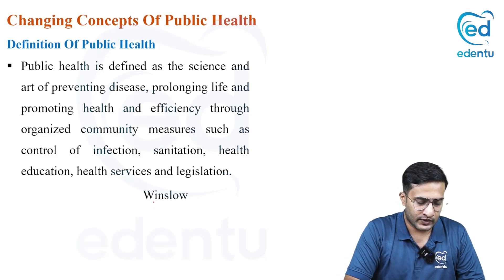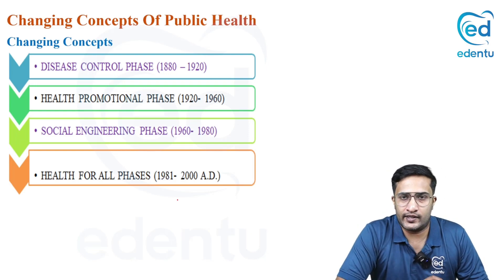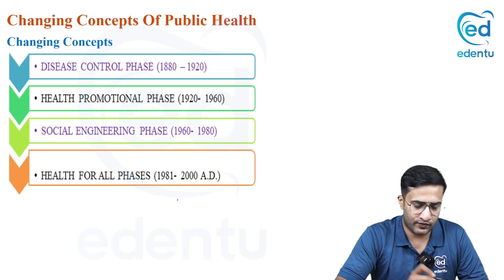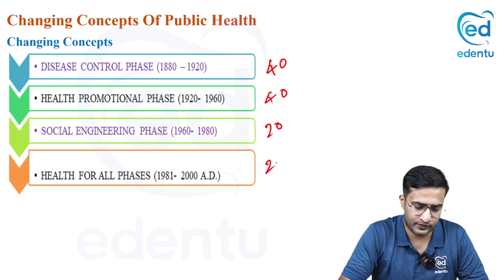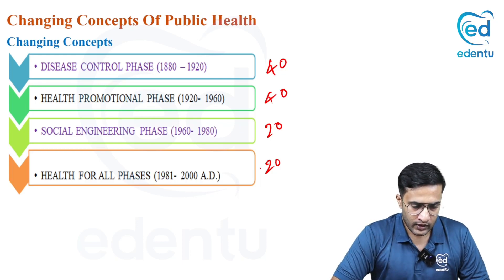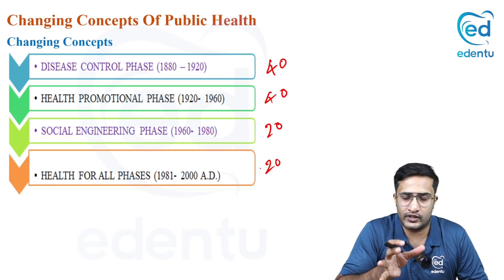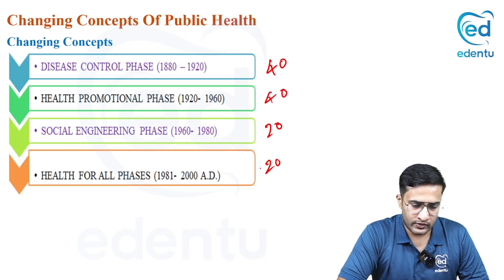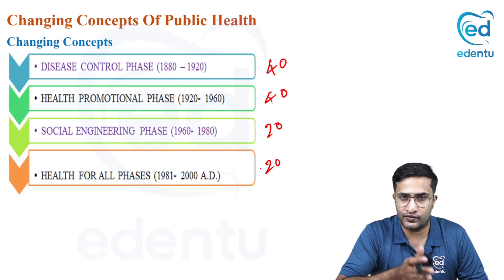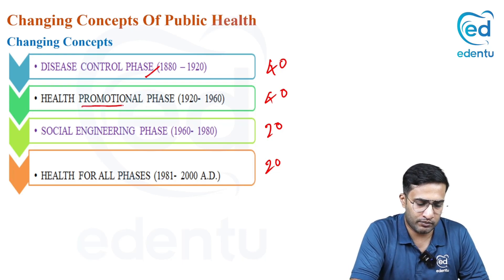Now we move to the concepts of public health. Do not forget it is public health — it is divided into four phases. The first two phases lasted 40 years each, and the last two phases lasted 20 years each. It started in 1880 in the last part of the 19th century. The first phase is the disease control phase, during the early 20th century and last part of the 19th century. The second phase, from 1920 to 1960, is known as the health promotional phase.